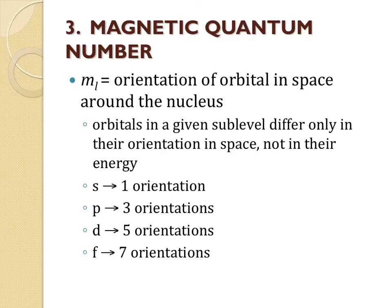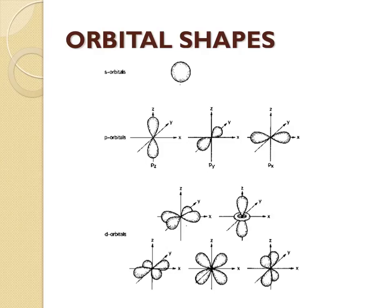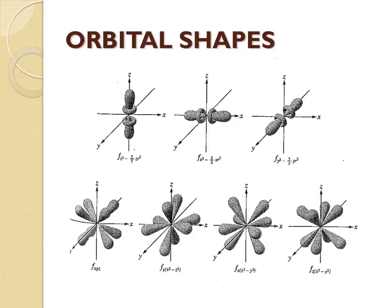Our third quantum number is the magnetic quantum number. The values for M sub L will tell us how many orientations the orbitals have in three-dimensional space. If an orbital has more than one orientation, all of those orbitals will be identical in energy, just differing in orientation. The S orbitals have only one orientation, the P's have three, the D's have five, and the F's have seven orientations.